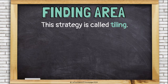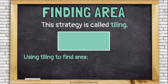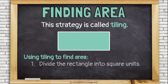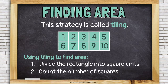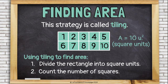This strategy is called tiling. Think about a tile floor where each tile is shaped like a square. We can use tiling to find area by first dividing the rectangle into square units, then simply counting the number of squares. In this case, there are 10, so this rectangle has an area of 10 square units. Those units might be feet, meters, miles, or inches — but since we haven't given it a specific unit, we're just saying units here to be general.